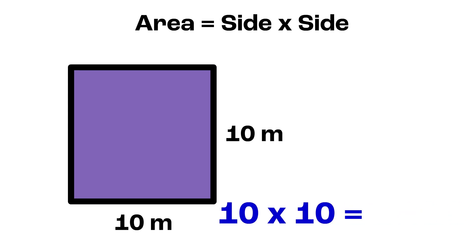We have 10 times 10. 10 times 10 is equal to 100. So, we have 100 meters squared.